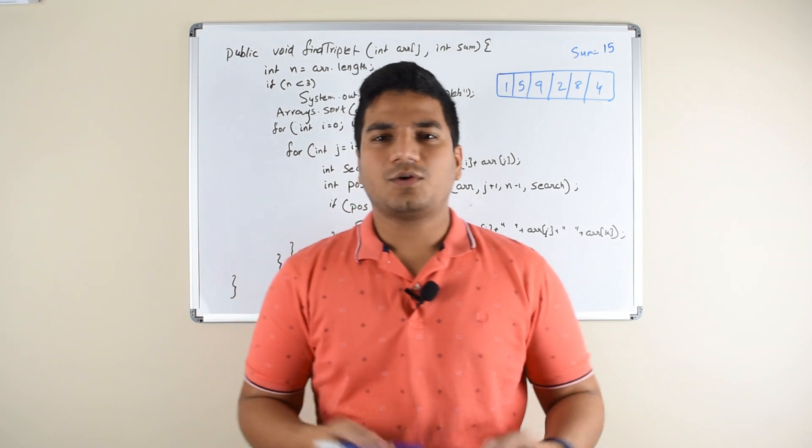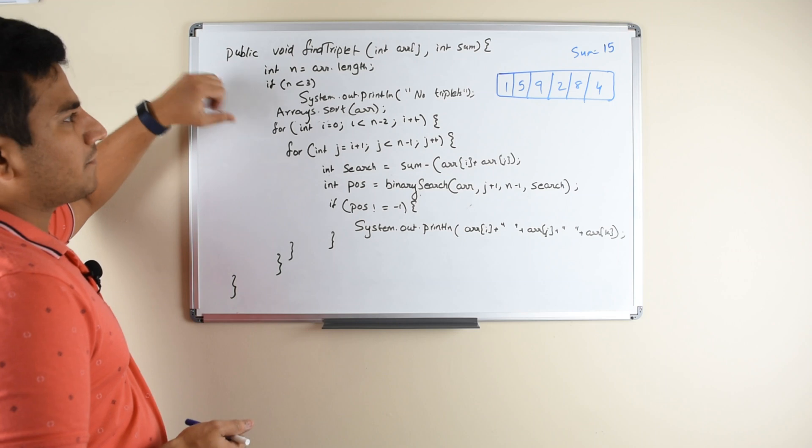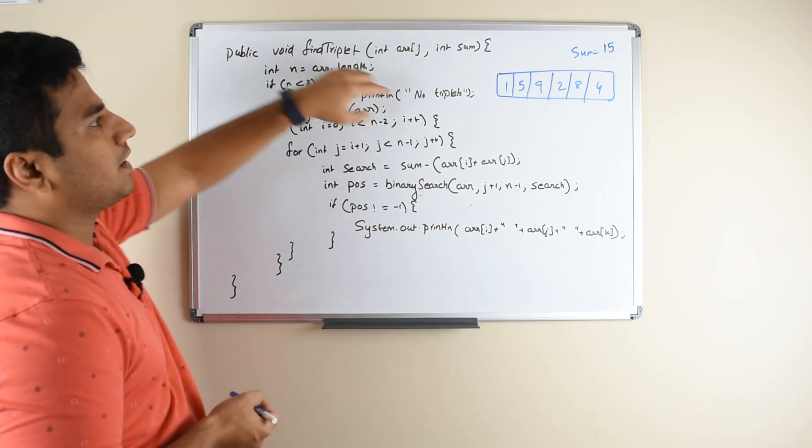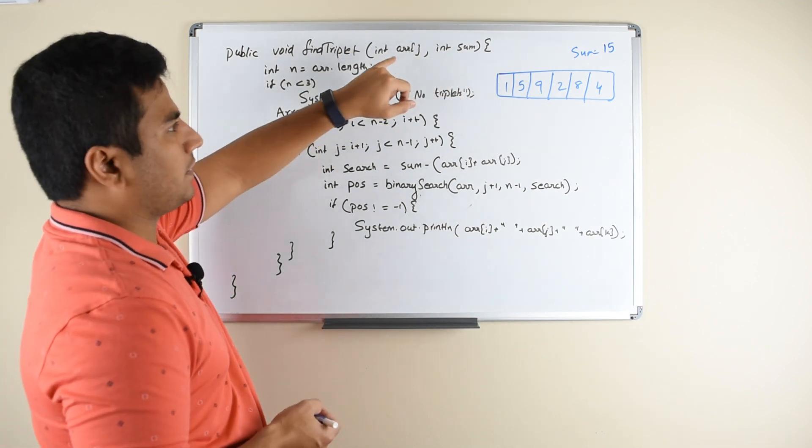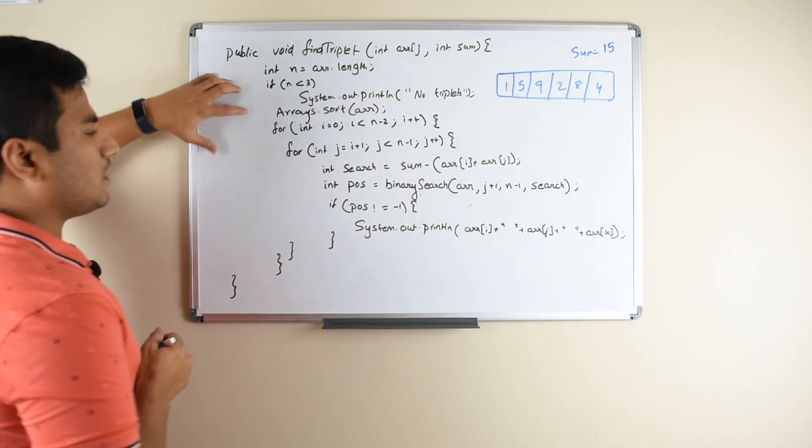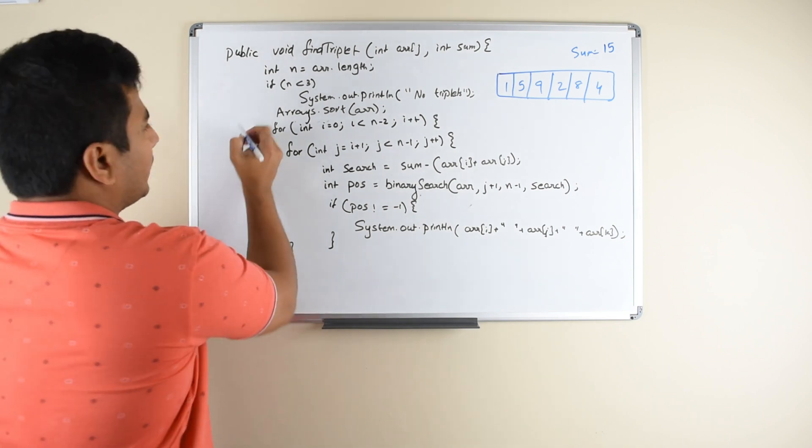So here is the code for the approach we just talked about. We have the same similar function as the previous video. You have a find triplet and you are being passed with an array and a sum. So you have to find a triplet in this array which adds up to the given sum. The logic is pretty much similar to the previous video, but there are a couple of key changes.